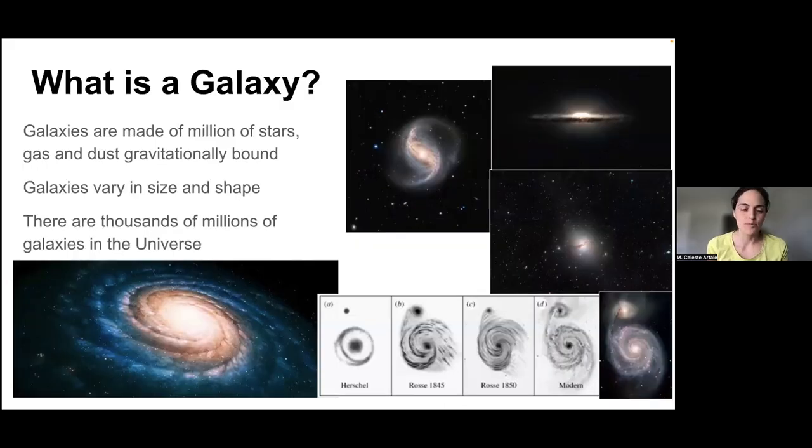Very nice responses. So what is a galaxy? Galaxies are made of exactly millions of stars, gas, dust. Here you see some of the images, some pictures of some galaxies. And galaxies, you see, vary in size and shape. And yeah, there are thousands of millions of galaxies in the universe.